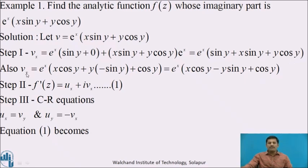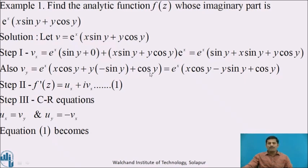Differentiating v partially with respect to y, treating x constant, we get vy equal to: e^x is constant, so we write it as it is. Inside the bracket, while differentiating with respect to y, x is constant and the derivative of sin y is cos y. In the second term, y·cos y is a product of two functions of y, so we use the product rule: writing y as it is, derivative of cos y is -sin y, plus cos y times derivative of y which is 1. After simplifying, we get e^x·(x·cos y - y·sin y + cos y).